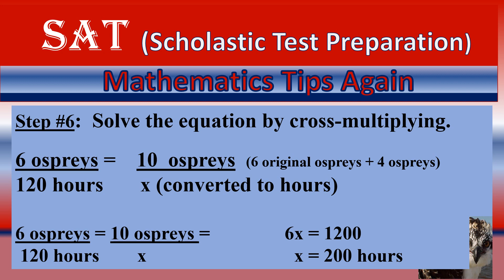So let's cross multiply. Six ospreys times x equals 10 times 120. You don't even have to do the full math — you can do mental math. 120 times 10, just add an extra zero, gives you 1200. So 6x = 1200, and x equals 200 hours. That's the answer to your question.